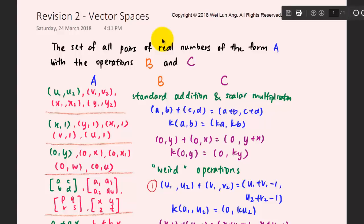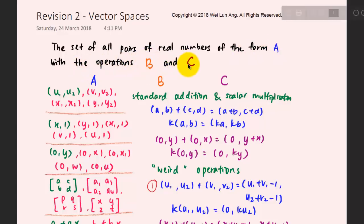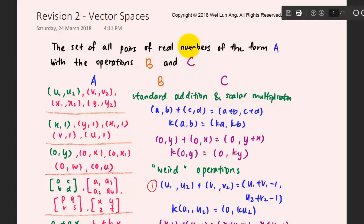In this version, we will determine whether the set of all pairs of real numbers of the form A, with the operation B as addition and C as scalar multiplication, whether this set of real numbers — objects, members, or vectors — they form a vector space or not.